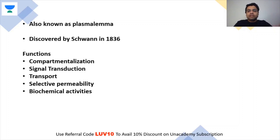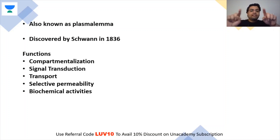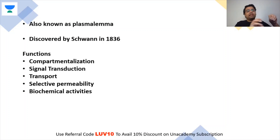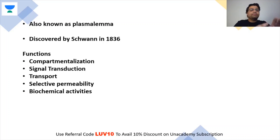If there is no membrane, compartmentalization does not occur. Then there is signal transduction — if it is a cell membrane, there are different signaling molecules and receptors. A molecule from outside binds to a receptor, completing the signal transduction pathway. There are also sodium and potassium pumps, and many transduction pathways which we will discuss in detail.